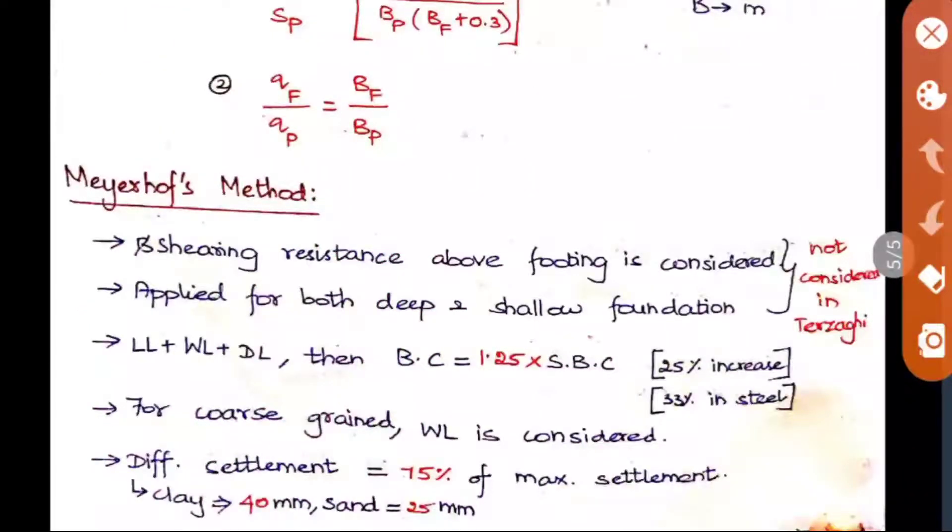Then the Meyerhoff method. This is the last concept we are going to see in this bearing capacity unit. Here the shearing resistance above the footing is considered, and this is applied for both deep and shallow foundation, whereas these two conditions are not considered in Terzaghi. Therefore, these two points are an advantage to this Meyerhoff method. Then, live load plus wind load plus dead load is considered, then bearing capacity should be multiplied by 1.25, that is 25% increase is given. So that 1 has changed to 1.25, and 33% in steel. Why I have written this in steel? Because in steel the permissible stress should be increased by 33%, and we will write 1.33 into the design load like that.